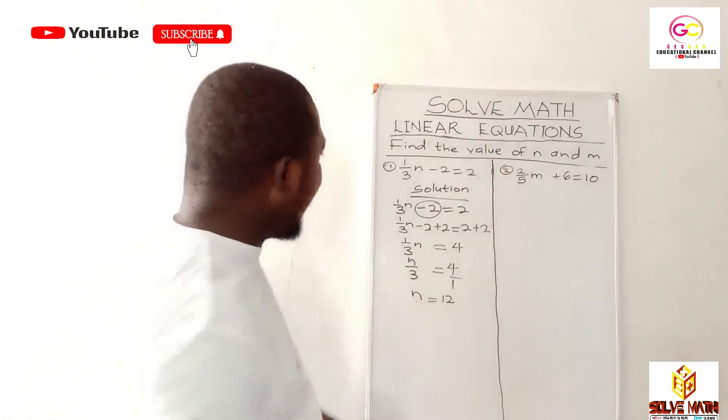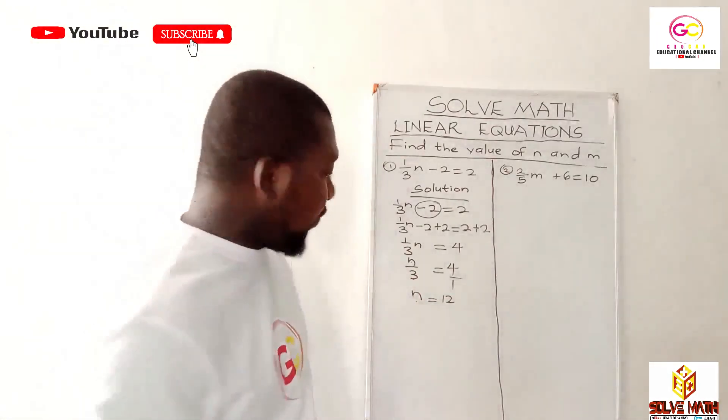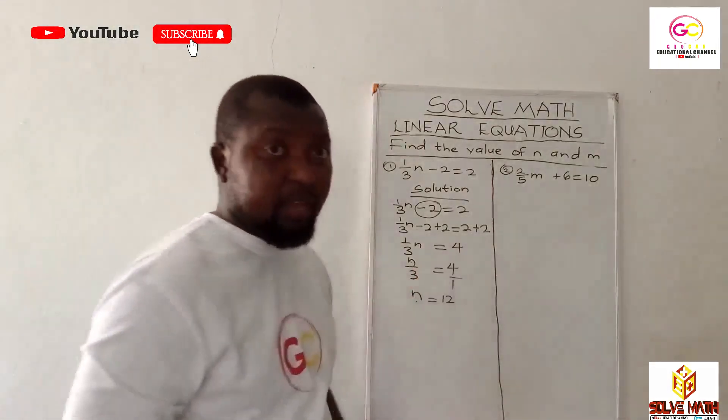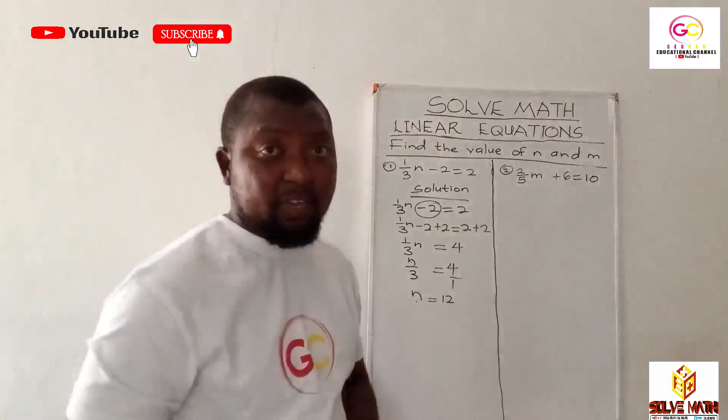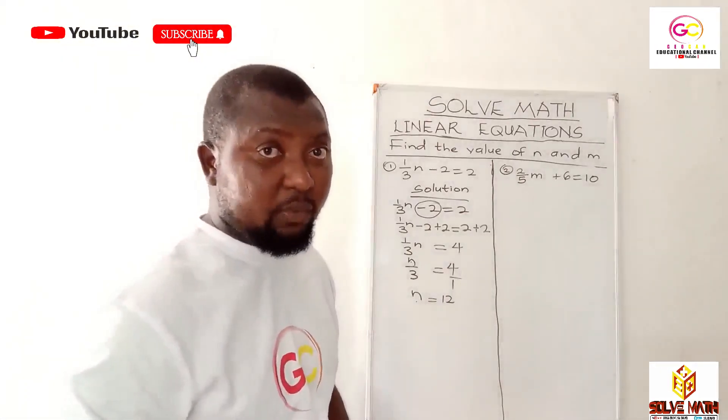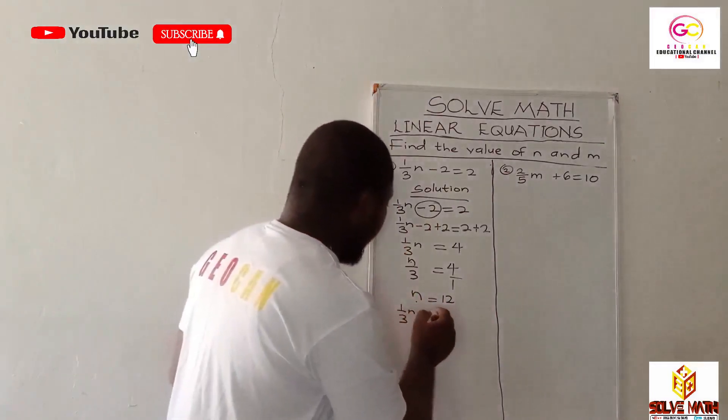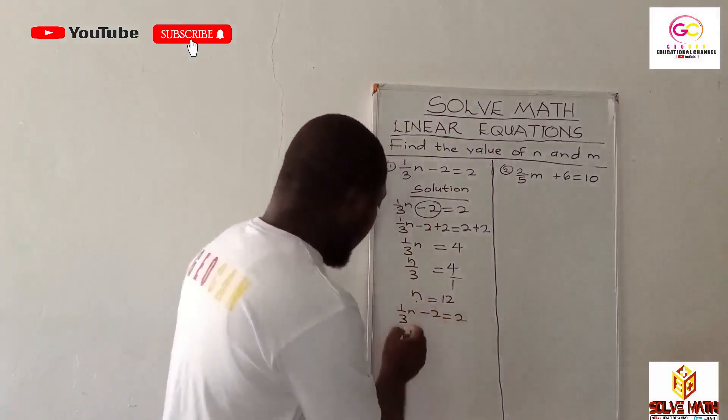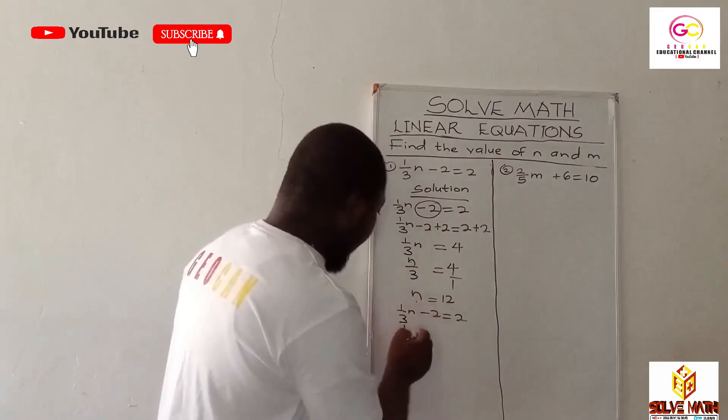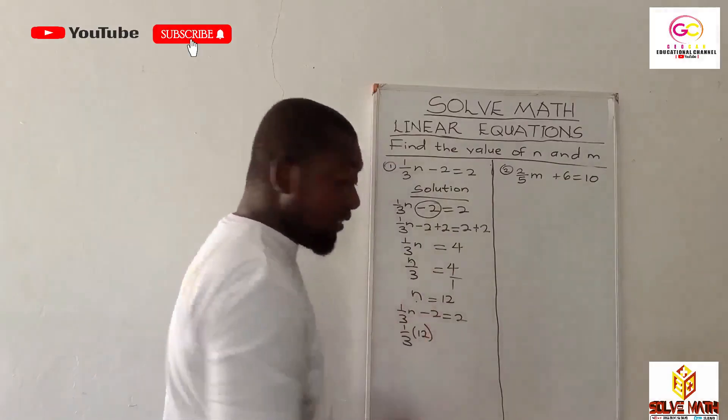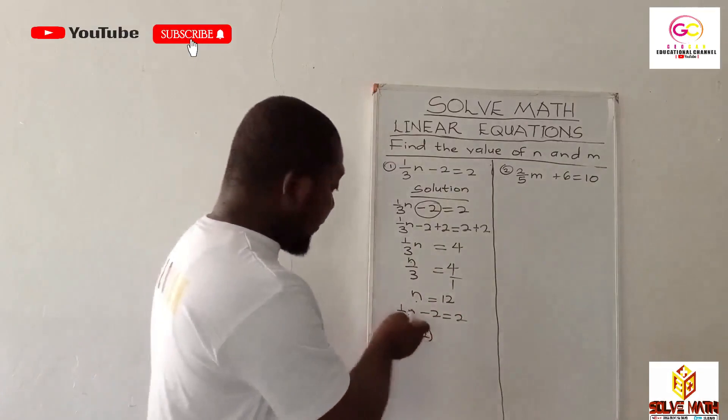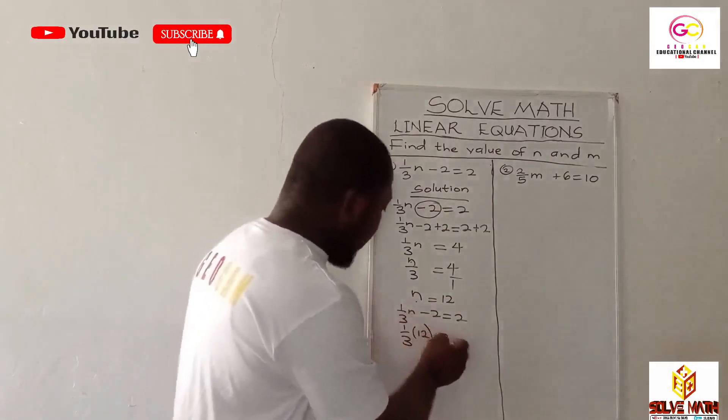Now let's go back to the equation. Anywhere we find n, let's substitute 12. If the right-hand side equals the left-hand side, then we are correct. So let's do that: 1/(3n) - 2 = 2. Now 1/(3 × 12)... this bracket simply means multiplication. You have minus two equals two.